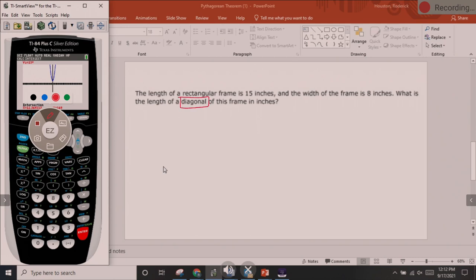Once again, we have that word diagonal. Remember, a diagonal simply cuts across that rectangle like that. So let's draw it and write in the numbers. The length is 15, we have a width of 8, and we want to find the diagonal this time.